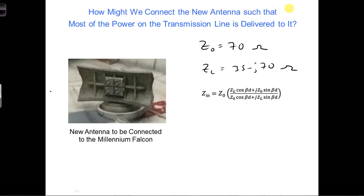If we're going to match the complex load to the real characteristic impedance of the transmission line, we would need to find a way to transform the complex load impedance to a real number that matches z0.